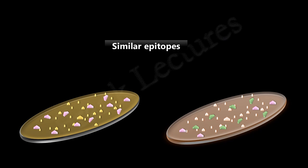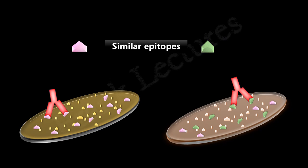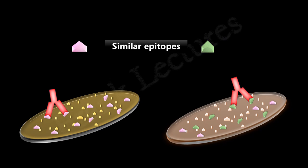There can be situations where similar epitopes are present on two or more different antigens. In such cases, antibodies specific to one of these antigens can also bind to the other antigen. This is known as cross-reactivity, which is defined as the ability of an antibody to react with similar epitopes on different antigens.